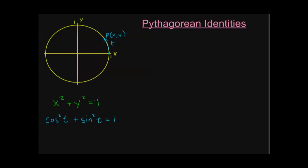Plugging in, I get cosine squared of t plus sine squared of t is equal to 1. That's it. I know that because this x and y are points on the unit circle, there's going to be some t where this is equivalent. So that's my first Pythagorean identity — easy. I usually write sine squared first, but it doesn't matter.